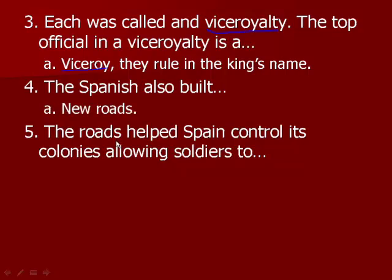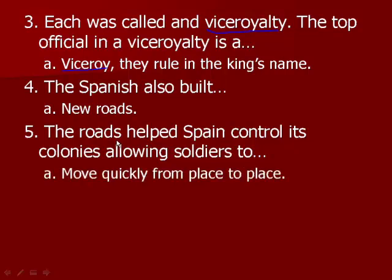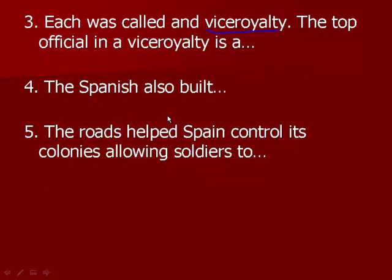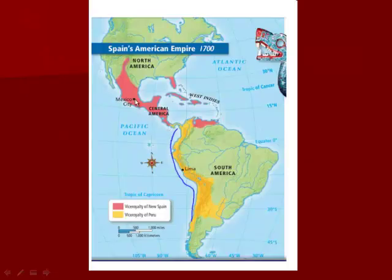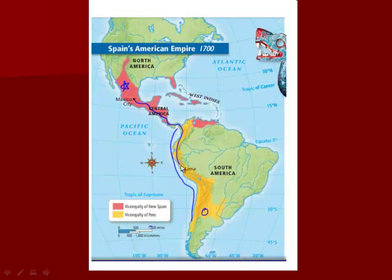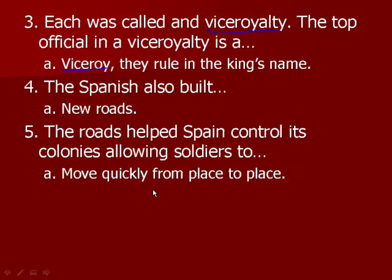The Spanish also built new roads to help the colonies be more efficient. The roads helped Spain control its colonies, allowing soldiers to move quickly from place to place. If all of the soldiers are up in New Spain and there is a problem down in Peru, it might take a really long time to trek through all the jungle. But with roads, it won't take nearly as long.